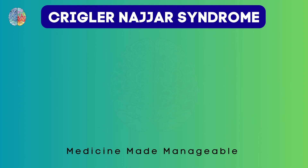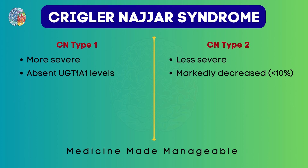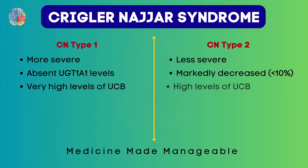There are two types of Crigler-Najjar syndrome. We have type 1 and type 2. Type 1 is more severe compared to type 2, which is less severe. In type 1, there are absent levels of UGT1A1. But in type 2, even though there are very low levels of this enzyme — less than 10% — there are at least some enzymes that are working. So in type 1, there will be very high levels of unconjugated bilirubin, but in type 2, the levels will be high but not as high as seen in type 1.